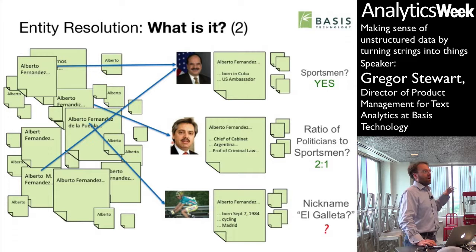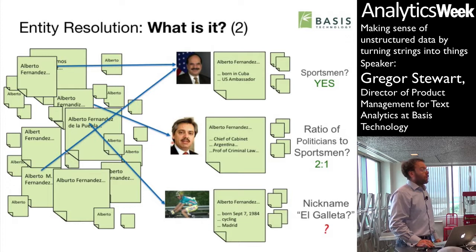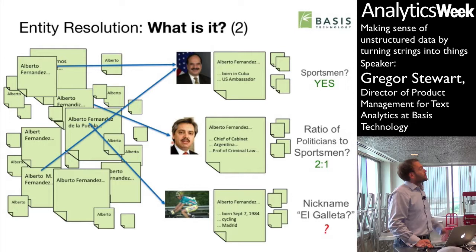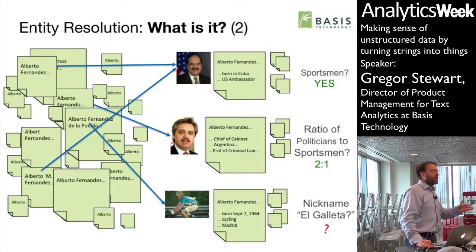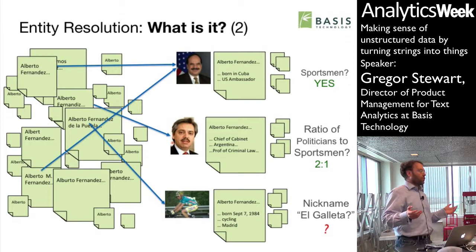Not only will a single Alberto Fernandez have great variation in his name, but the variation across the different Alberto Fernandezes is also difficult to deal with. You can look at the context around them — two are quite similar: a U.S. ambassador and a chief of cabinet of Argentina, political actors who are difficult to tell apart. But the third Alberto Fernandez is a cyclist, and he'll be mentioned in very different contexts — things like the Tour de France or the Vuelta — which won't appear in articles about the two politicians.